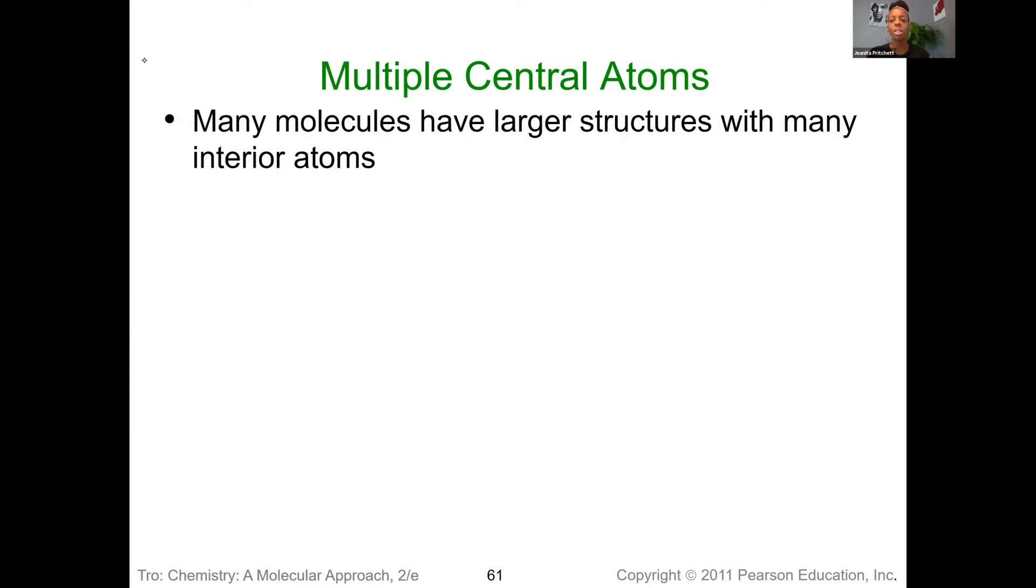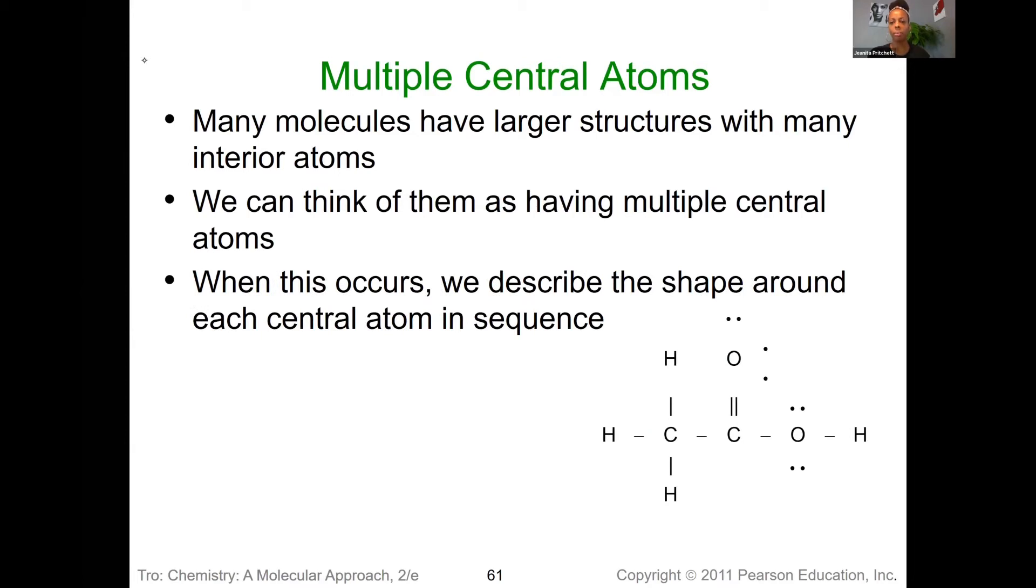So how do we deal with it? We really deal with it the same way we've been dealing with the single central atom situation. We just essentially treat each central atom independently when we think about the geometry that it would be taking. What we would be doing is we're counting the lone pairs in the Lewis structure and bonding regions that exist around a central atom as we're doing the counting.